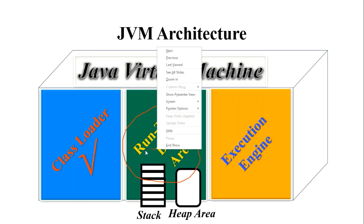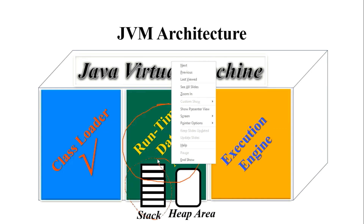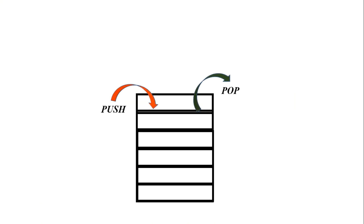We will focus on the stack memory area inside the runtime data area. What do you mean by stack? Stack is a data structure, or you can say it is an abstract data type. An abstract data type means the operations you can perform on a data structure are predefined — that kind of modeling is known as ADT. In stack, we can perform two major operations: push and pop.